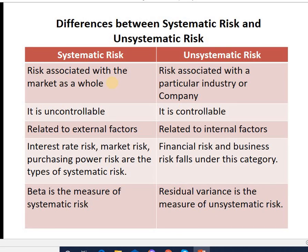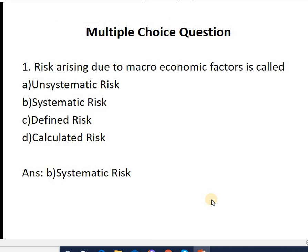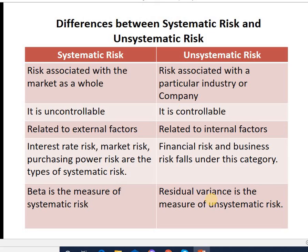To summarize the difference: systematic risk is associated with the market as a whole and is uncontrollable, related to external factors; unsystematic risk is related to a particular industry or company and is controllable, related to internal factors. Interest rate risk, market risk, and purchasing power risk are types of systematic risk; financial risk and business risk fall under unsystematic risk. Beta is the measure of systematic risk, while residual variance is the measure of unsystematic risk. Thank you students, this concludes session 2.